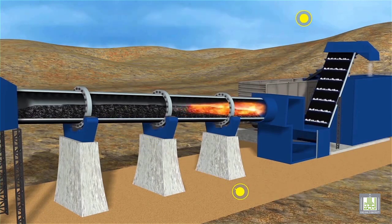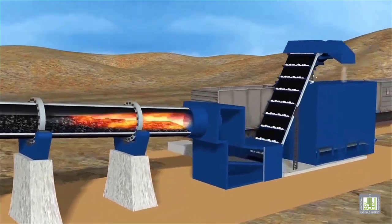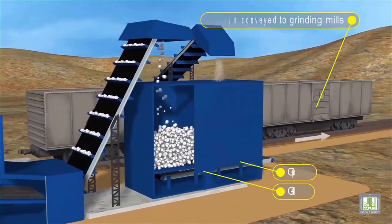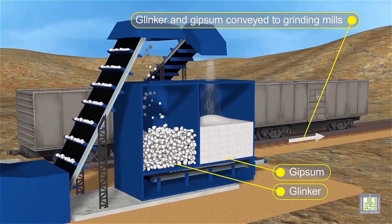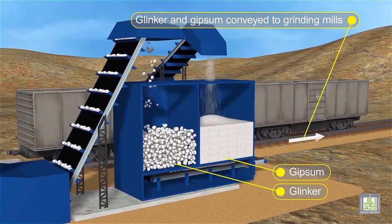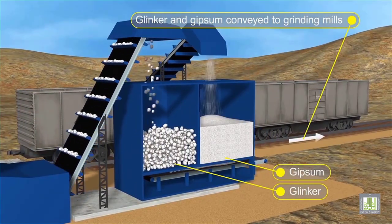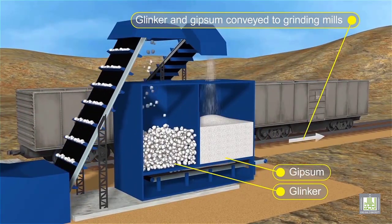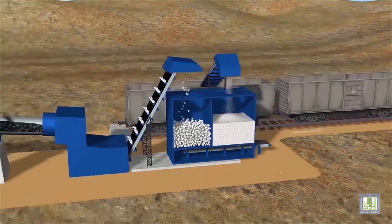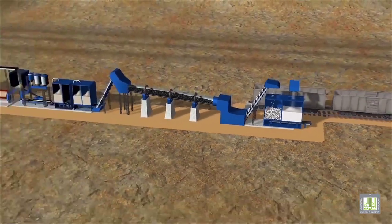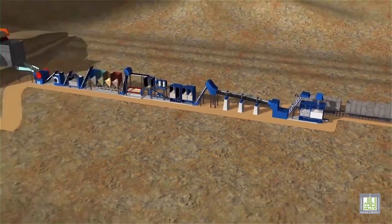This is known as dry process technology because no water is added to the ground raw materials. It is the process used by modern cement manufacturing plants.